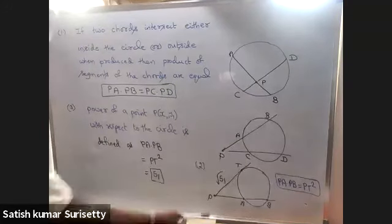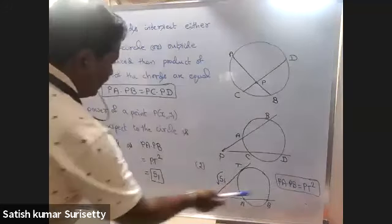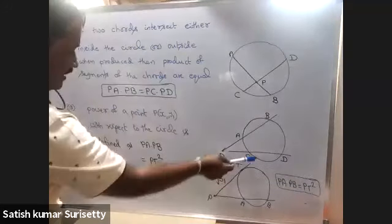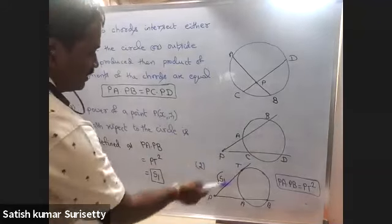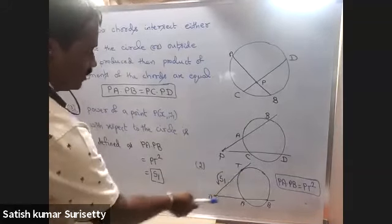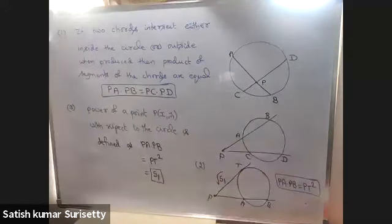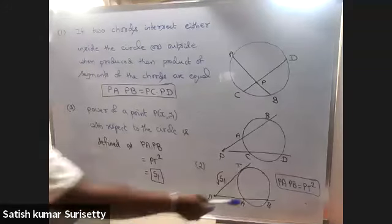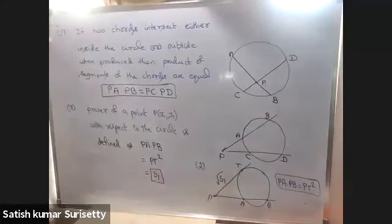Now suppose we have one secant and one tangent, then PT squared equals PA into PB. This can be derived from the previous property.